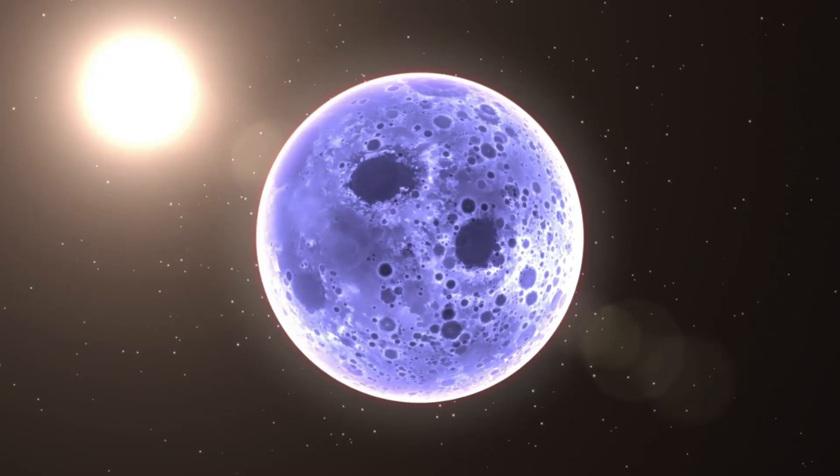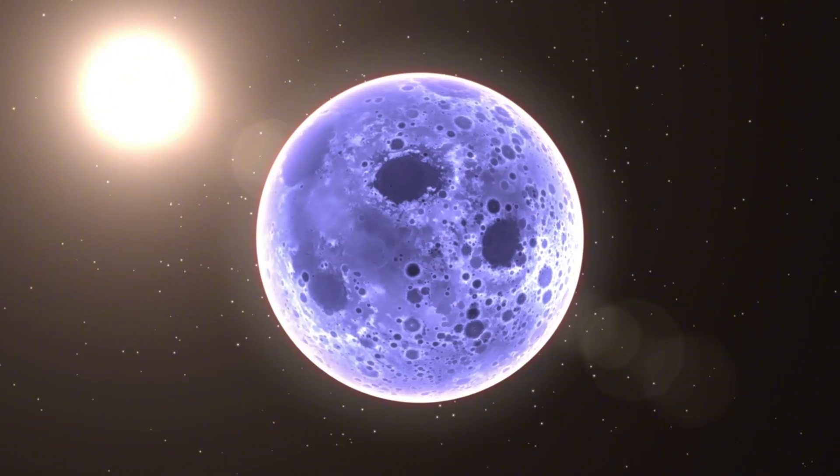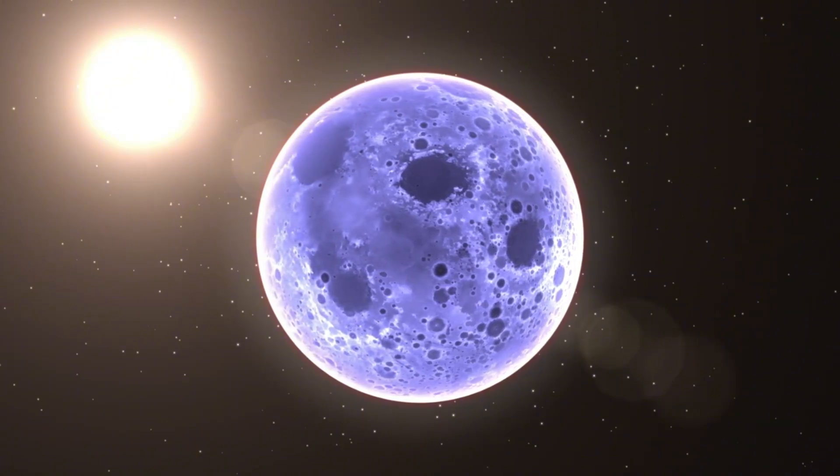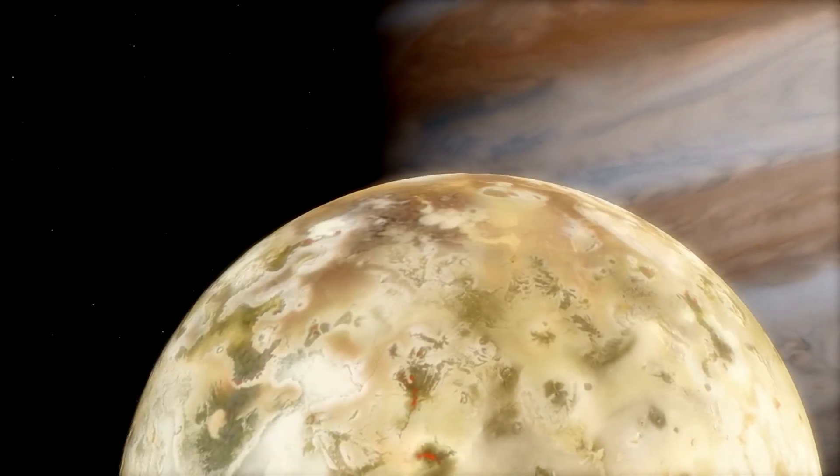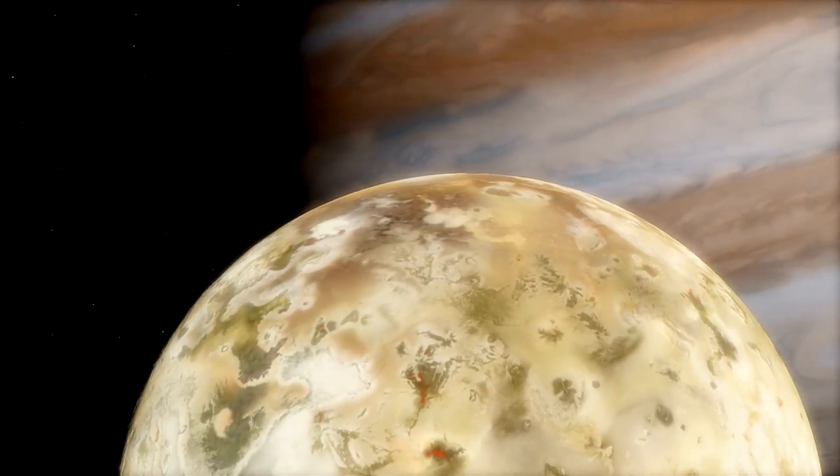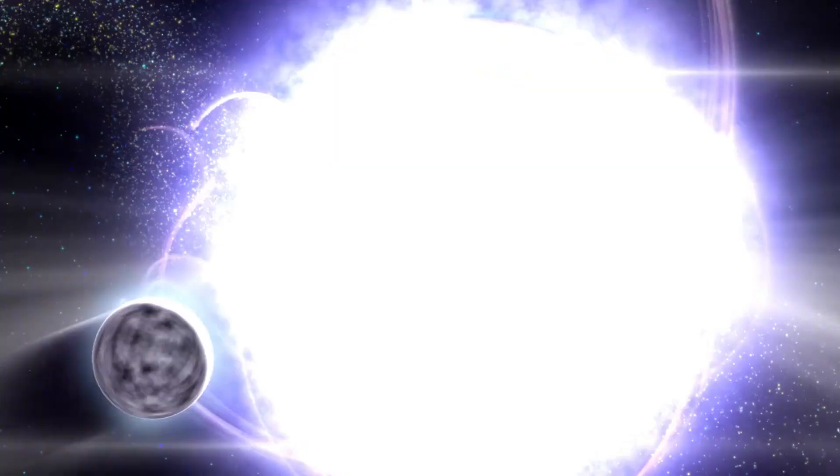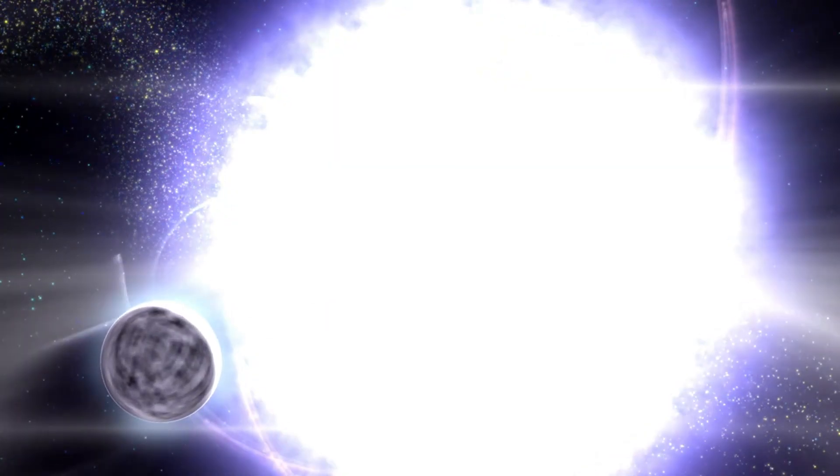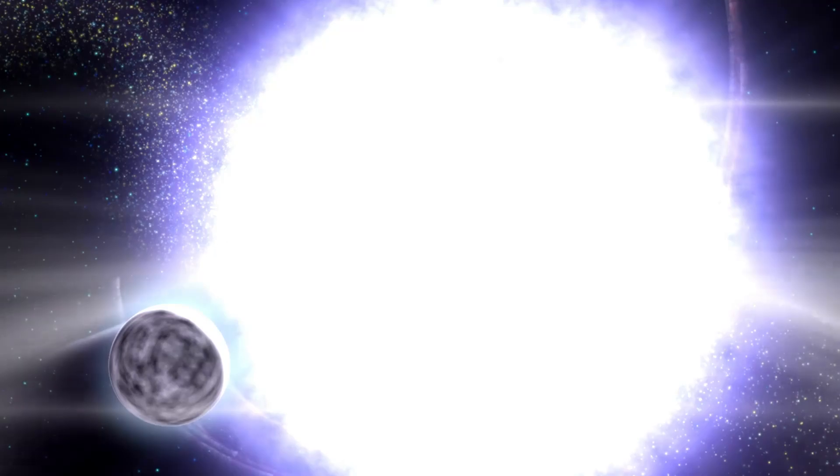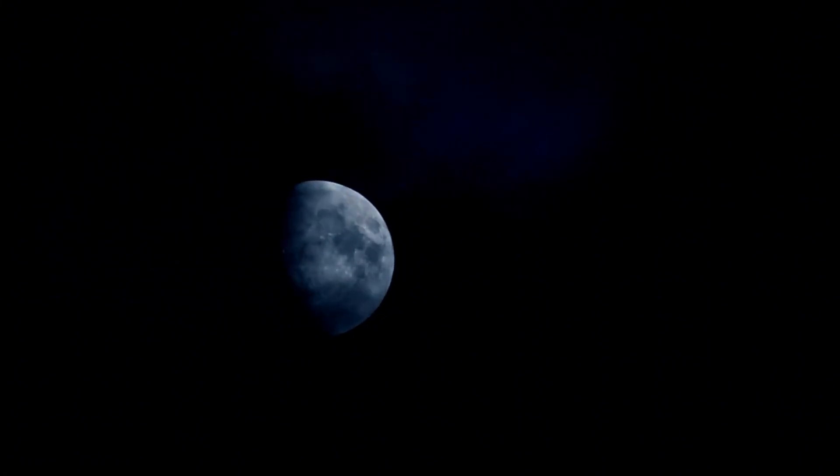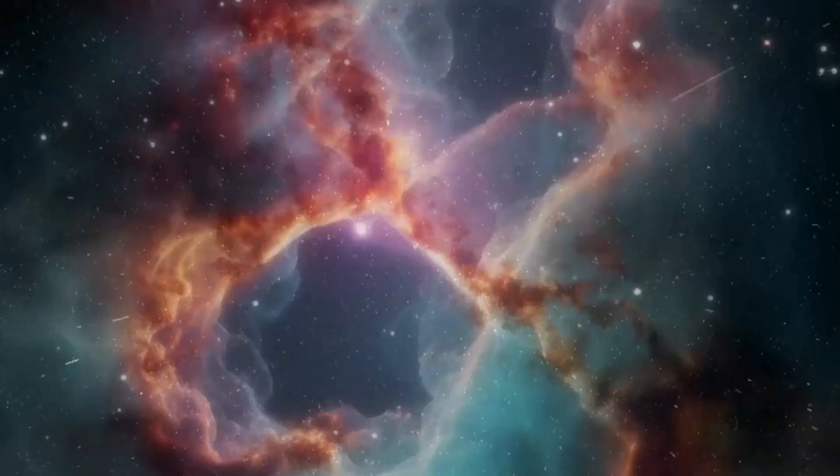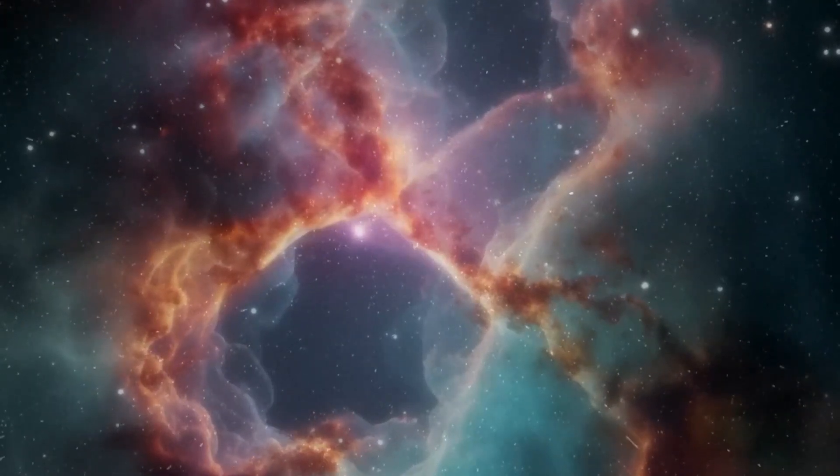One such event occurred on the morning of September 1, 1859. Astronomer Richard Carrington was observing the sun through his telescope, as he had done many times before. However, what he saw on this particular day would go down in history as the first recorded solar storm. At 11:18 a.m., Carrington saw a brilliant flare of white light emanating from a group of sunspots. This event, now known as the Carrington Event, marked the beginning of the largest geomagnetic storm ever recorded.